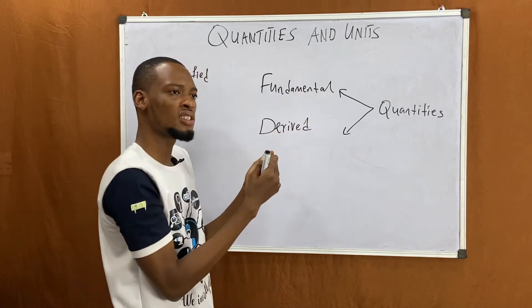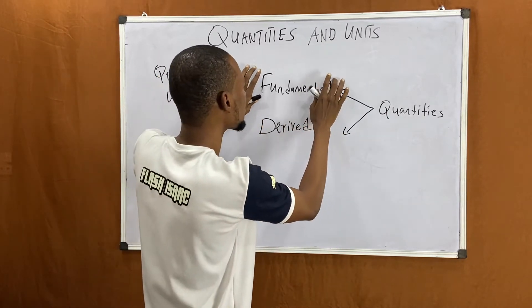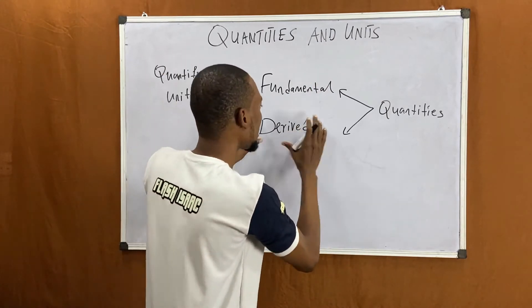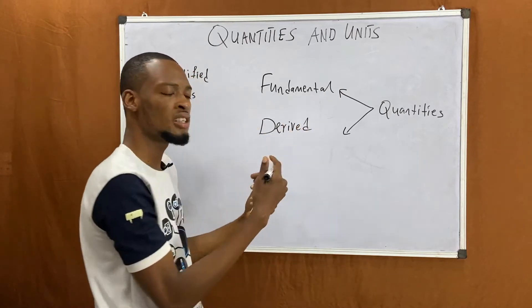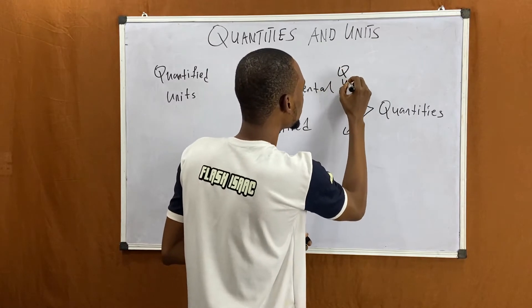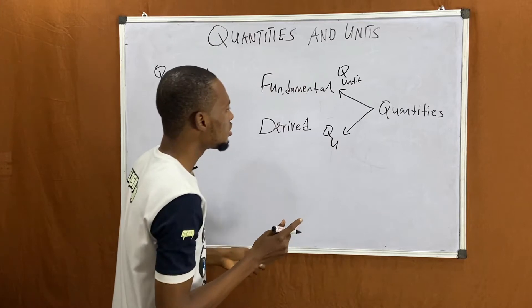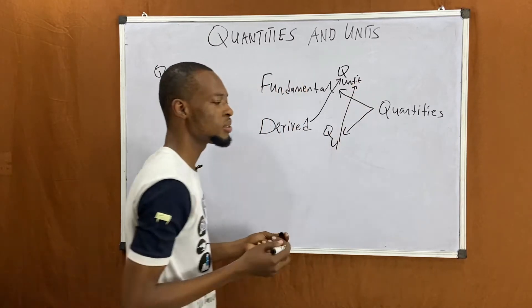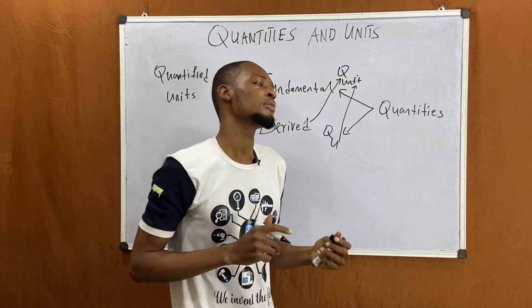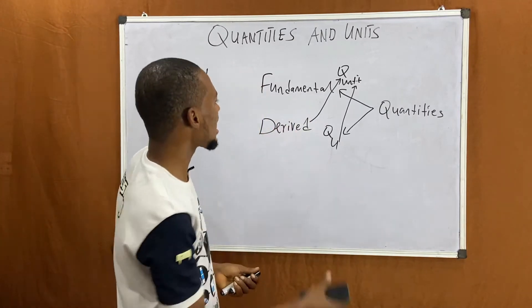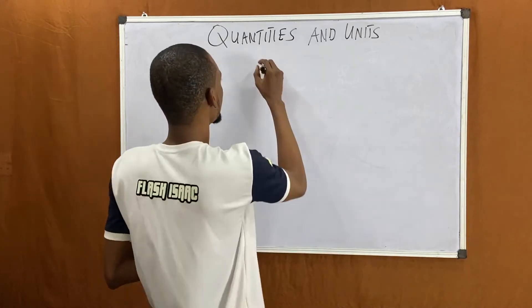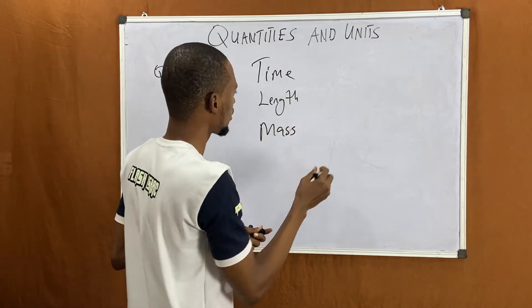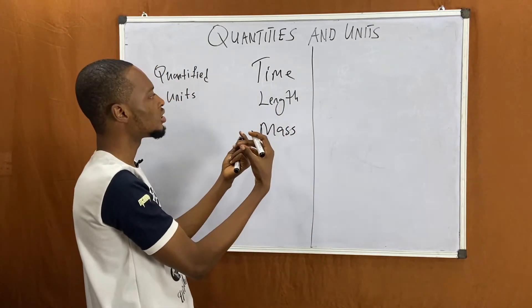Fundamental quantities depend on other quantities to exist, and these fundamental quantities have units — ways we measure them. We also have derived units, which are gotten from fundamental units. The three main fundamental quantities are time, length, and mass.